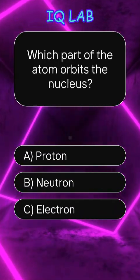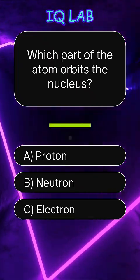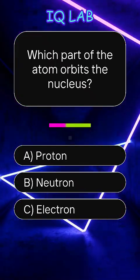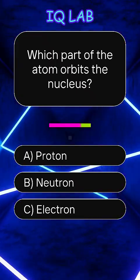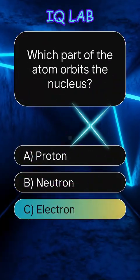Which part of the atom orbits the nucleus? Answer C, electron.